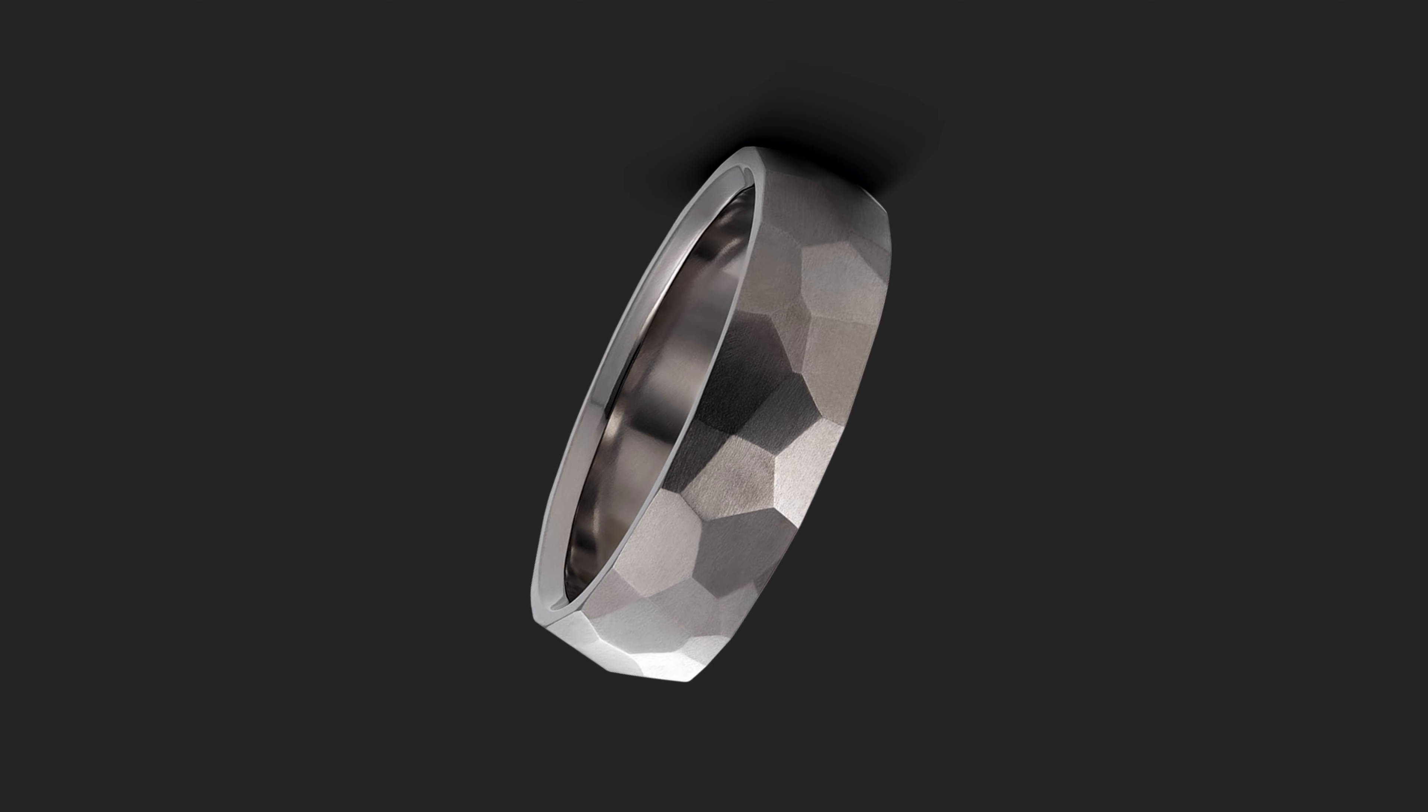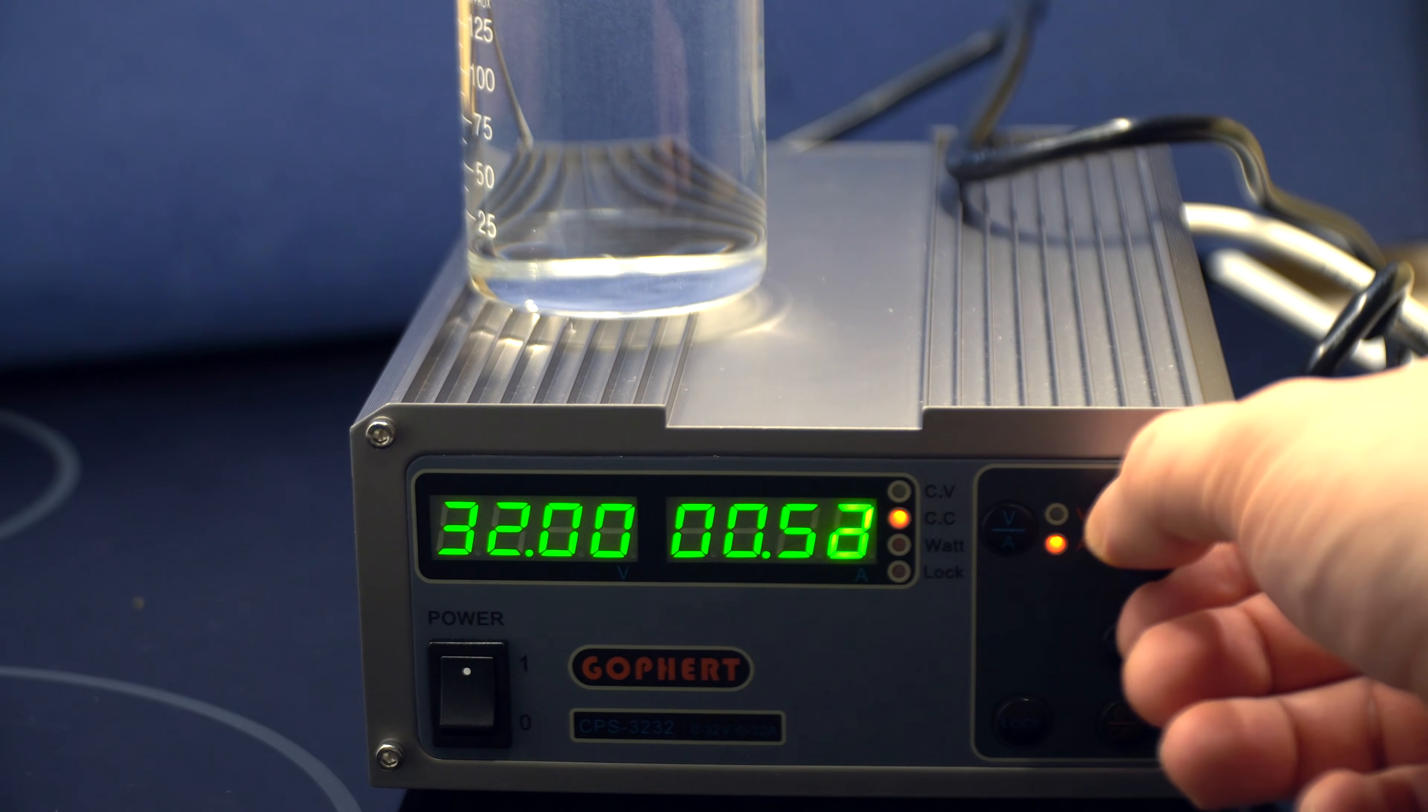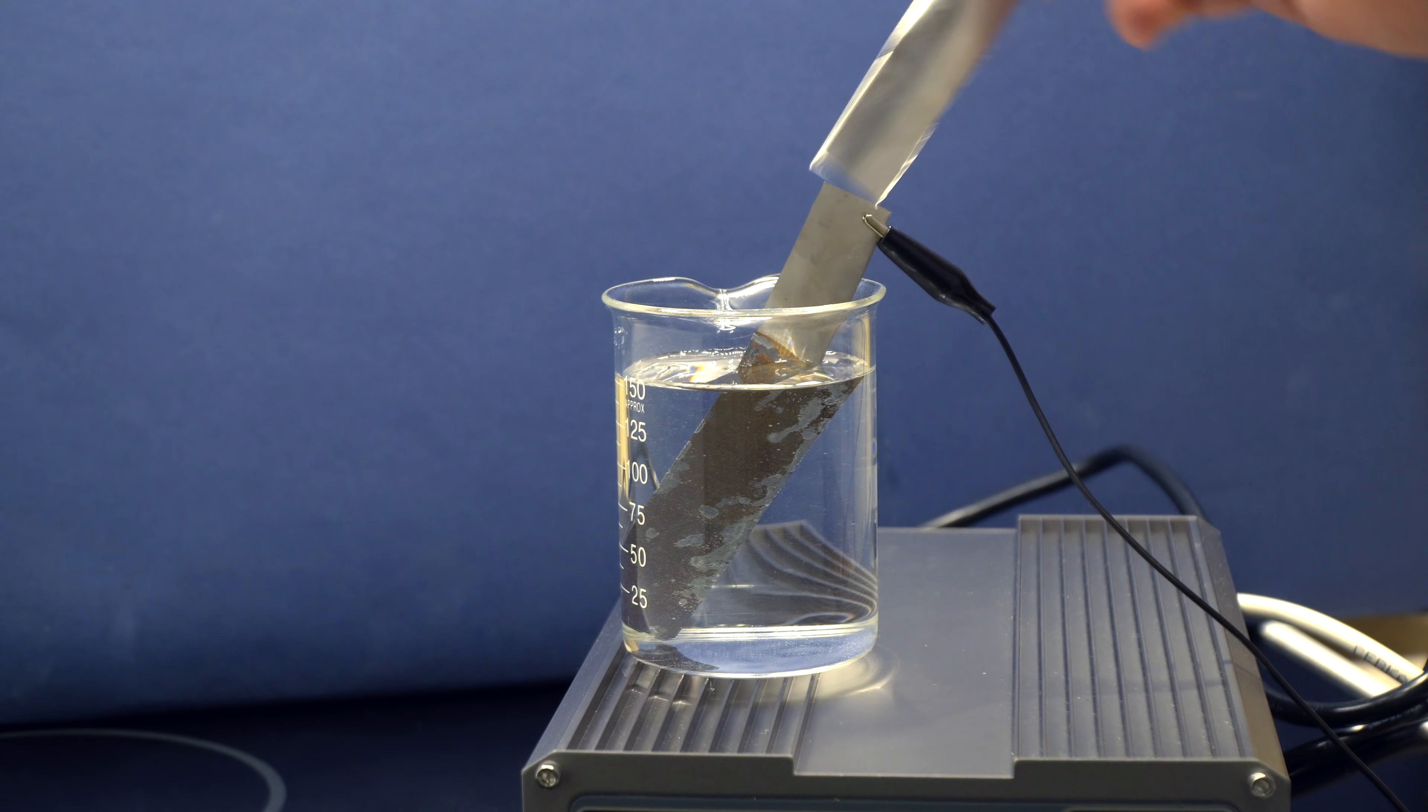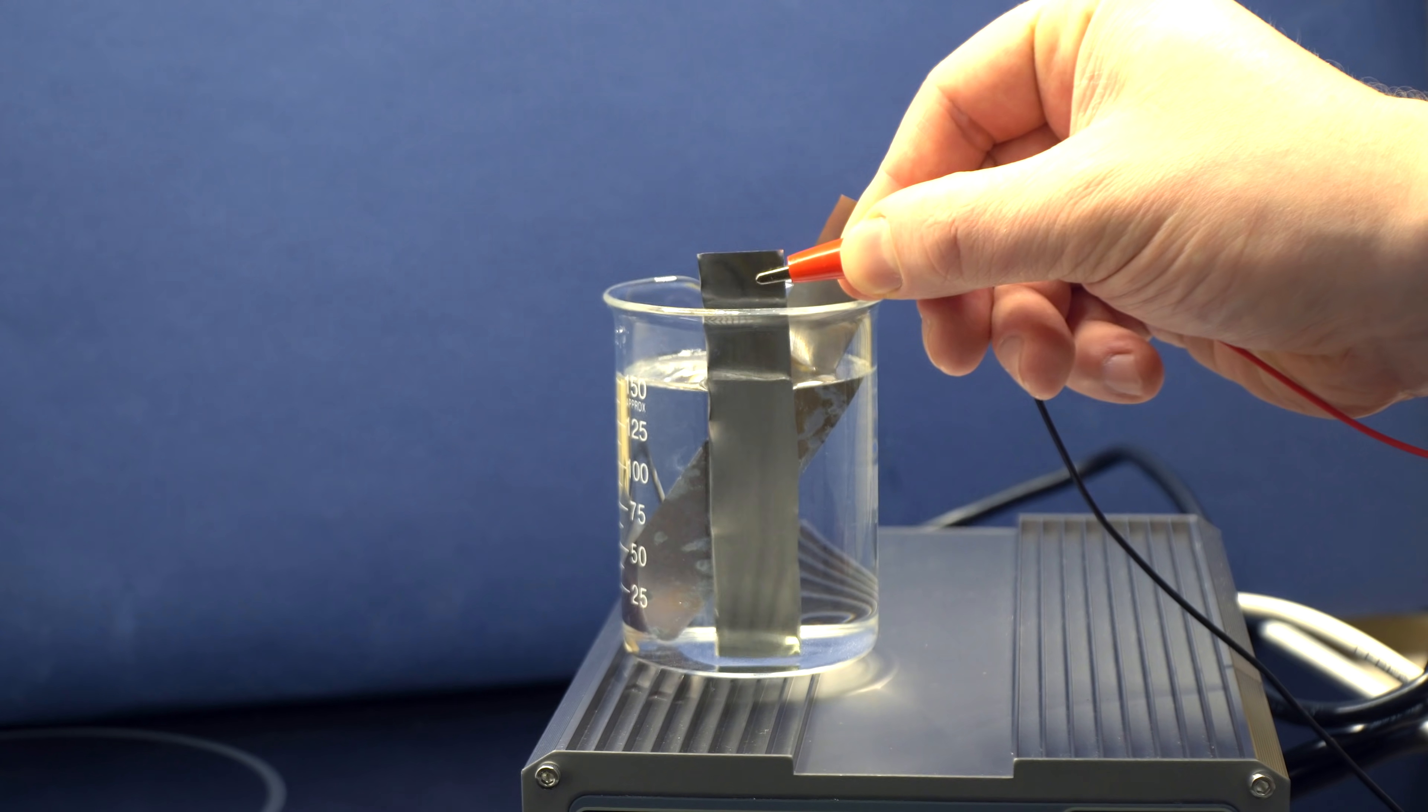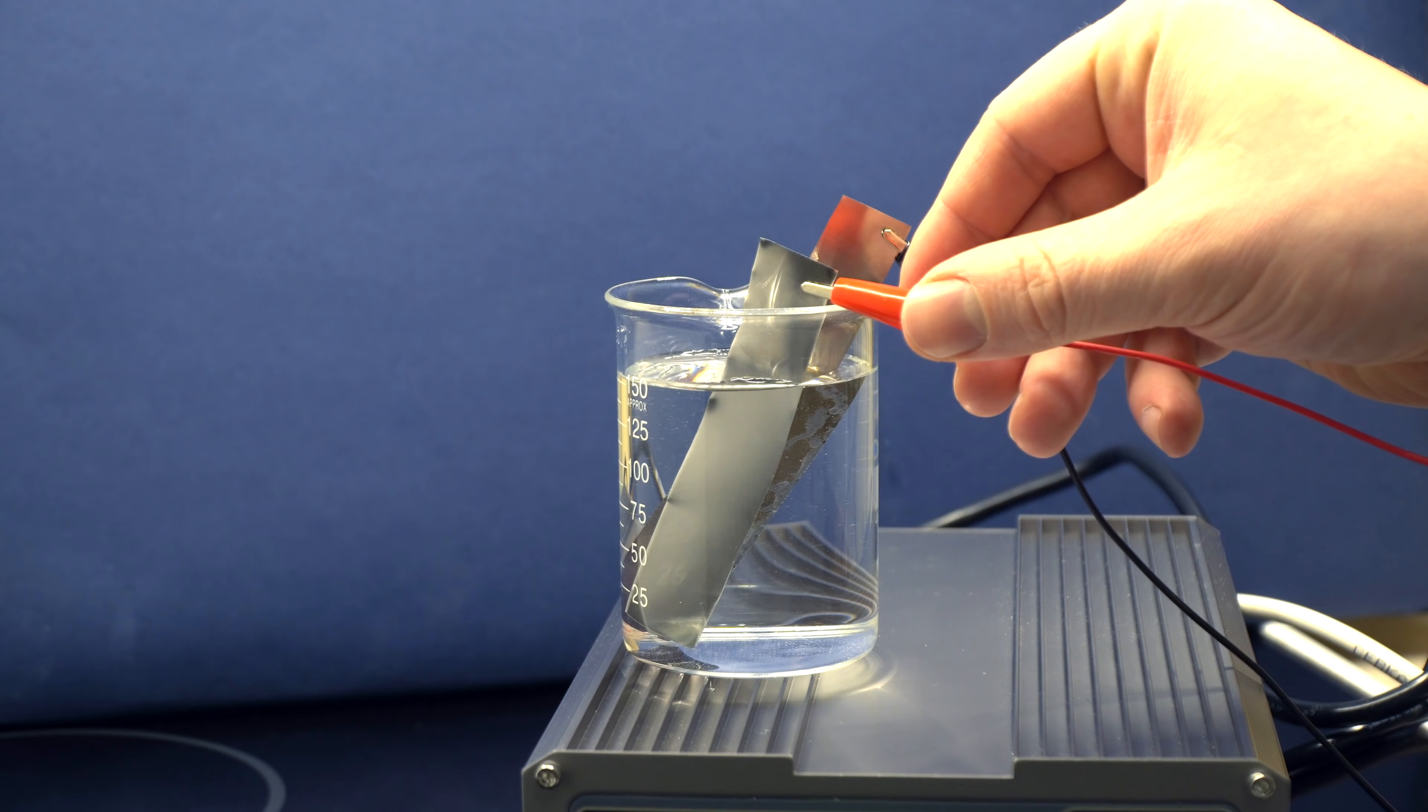However, tantalum by itself is gray and doesn't shine as beautifully as gold. I decided to fix that with the help of electrochemistry. For this, I took a piece of tantalum foil and placed it into a solution of table salt, then connected it to the anode of the power source that will pick up electrons from the metal.